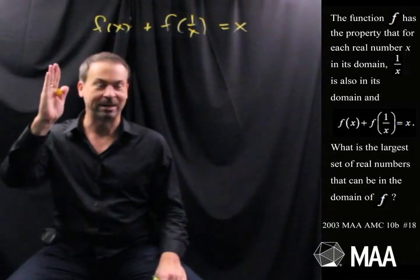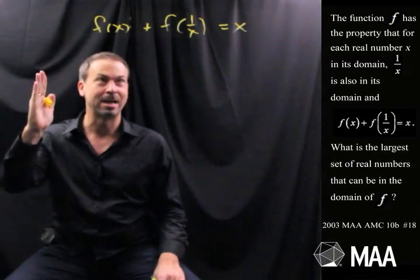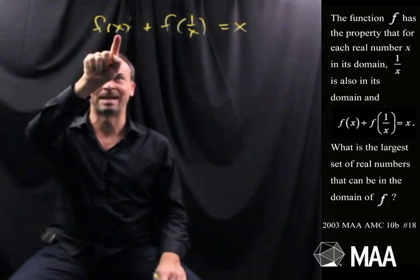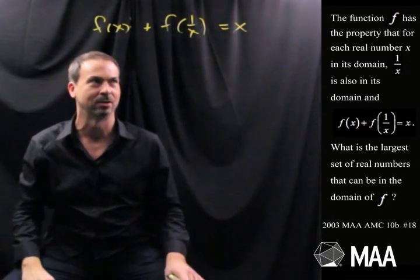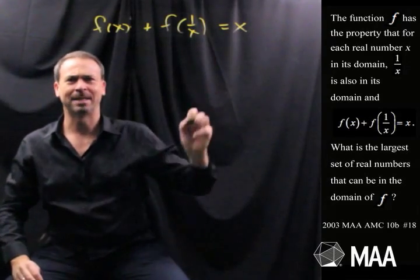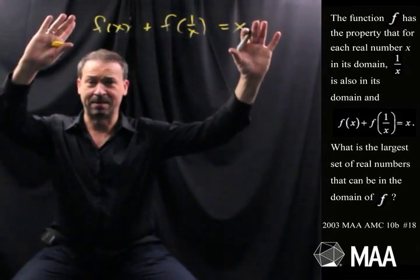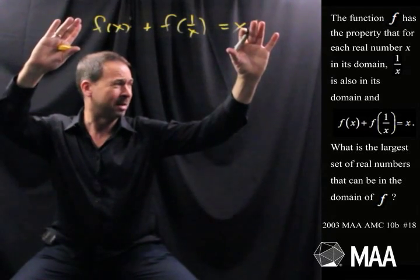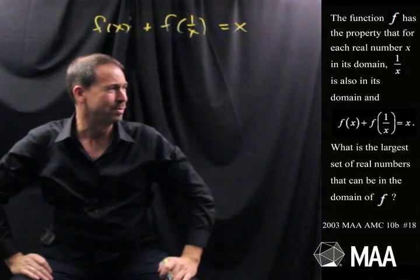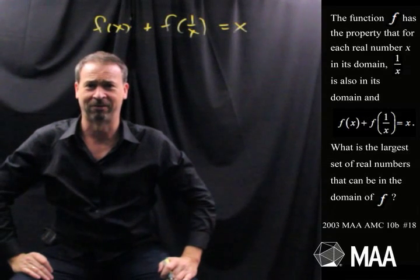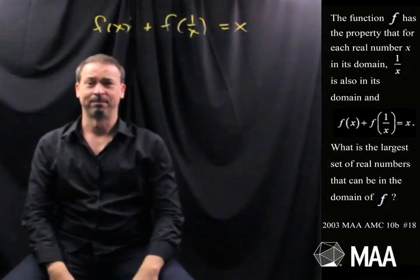I've got a function f, I'm just rereading it right now, such that whenever x in the domain, 1 over x is also in the domain. So I guess there's an x, there's a 1 over x. They both make sense of the function. I get that. But this thing is weird. Somehow I'm meant to play with this, and I've never seen something like this before, and answer a question about the largest set of real numbers that can be in the domain of f. Okay, this is scary. This is totally scary.